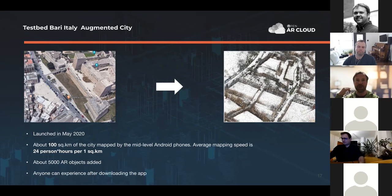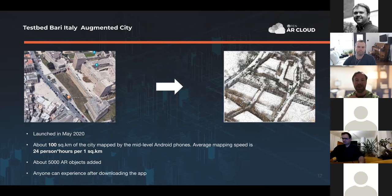The placed objects include information markers, 3D objects, and videos — all kinds of objects. Partners we work with, including businesses and schools, also did some mapping themselves and placed different objects. In addition to the Bari testbed, we currently have smaller spots in 97 other cities around the world. It's quite easy to take our tools and start mapping, and you immediately get access to GeoPose servers and SDS.